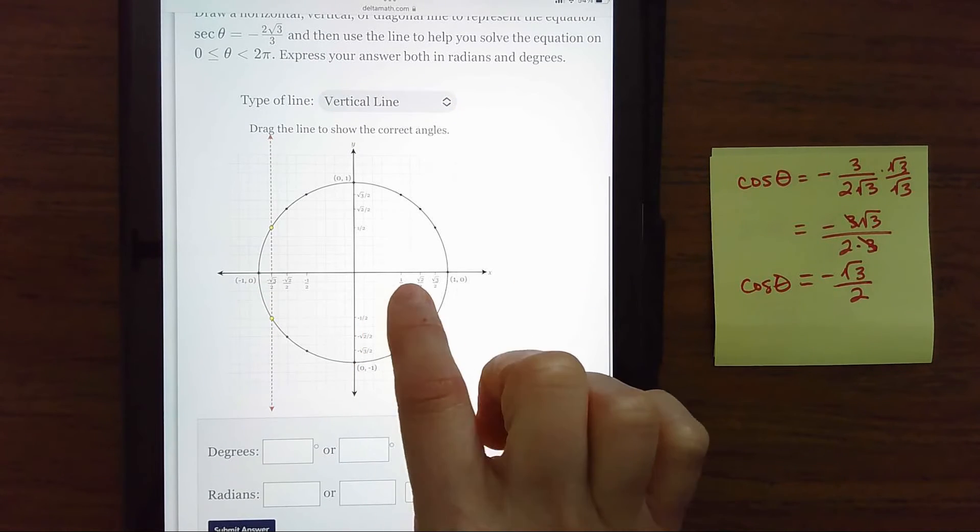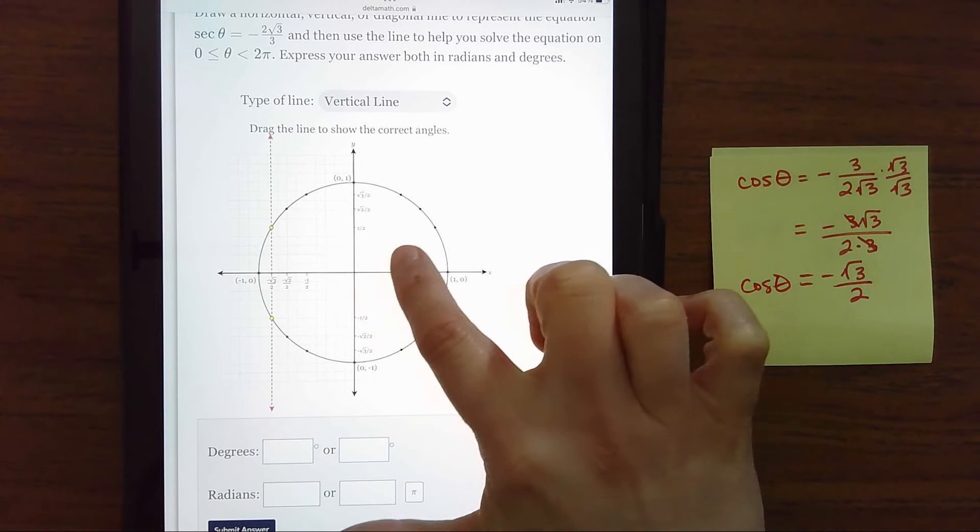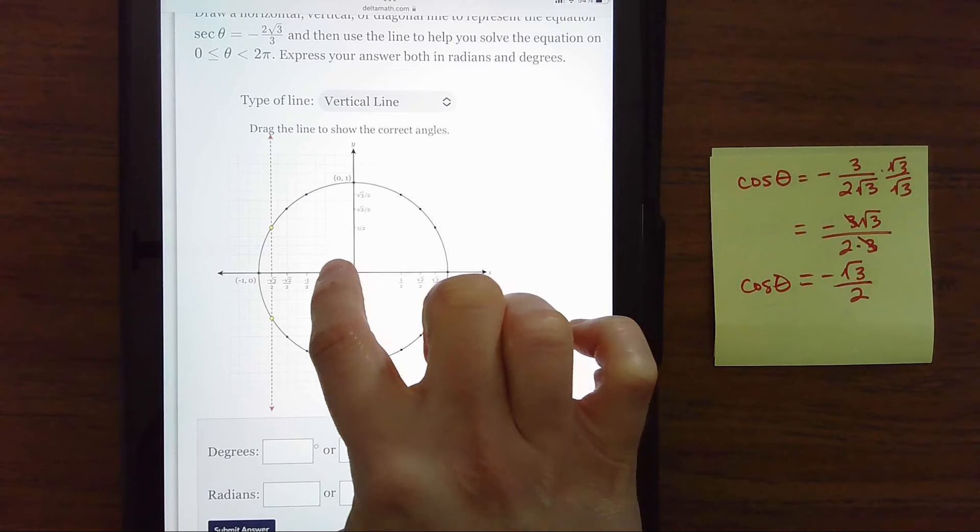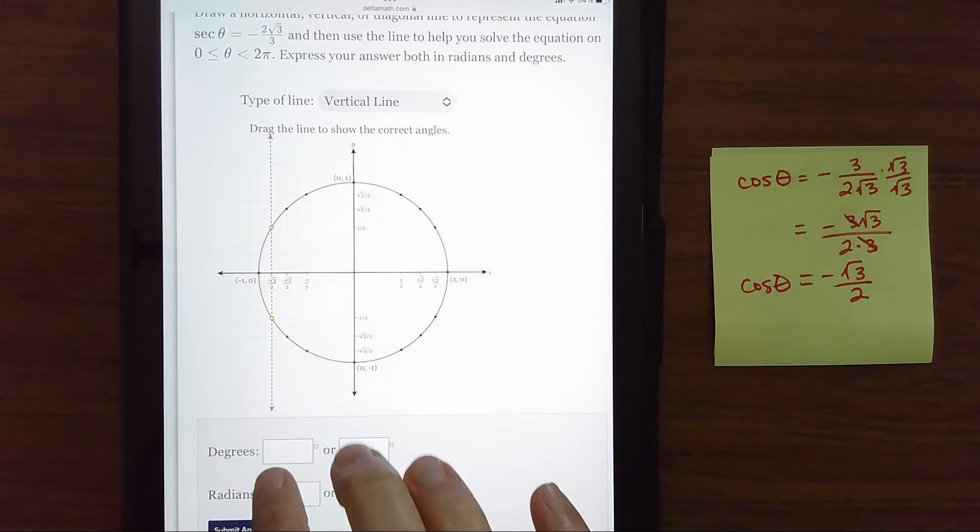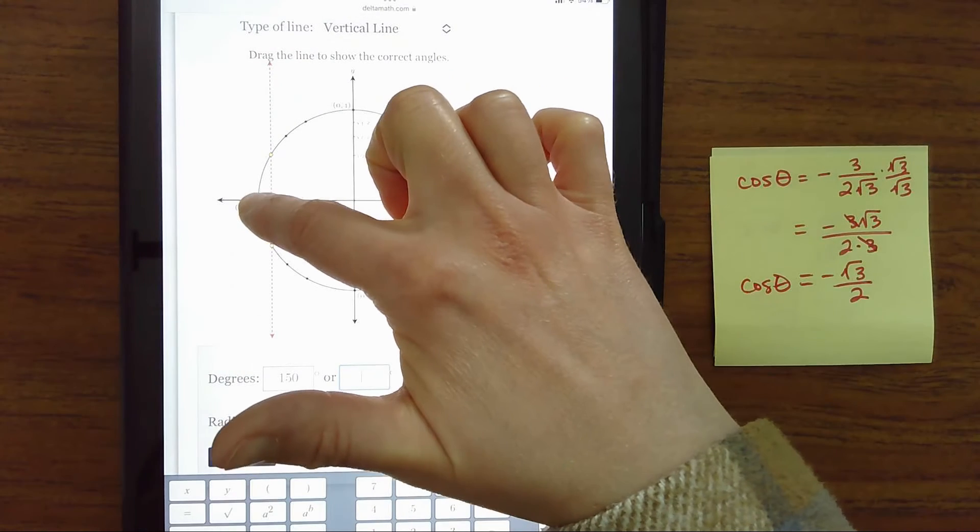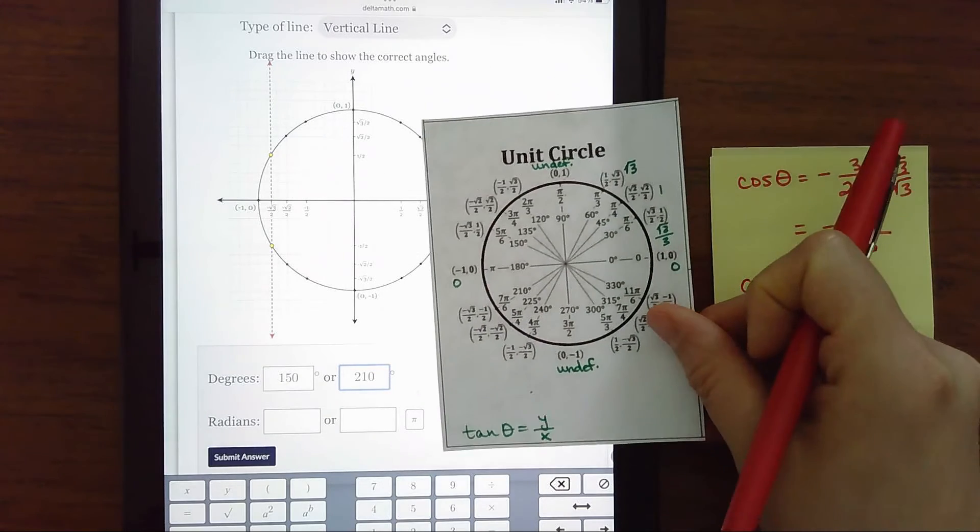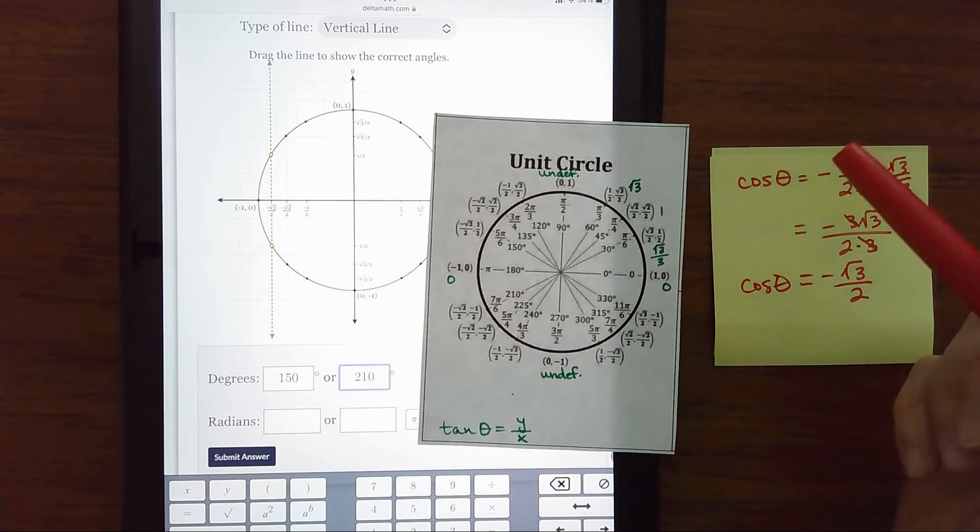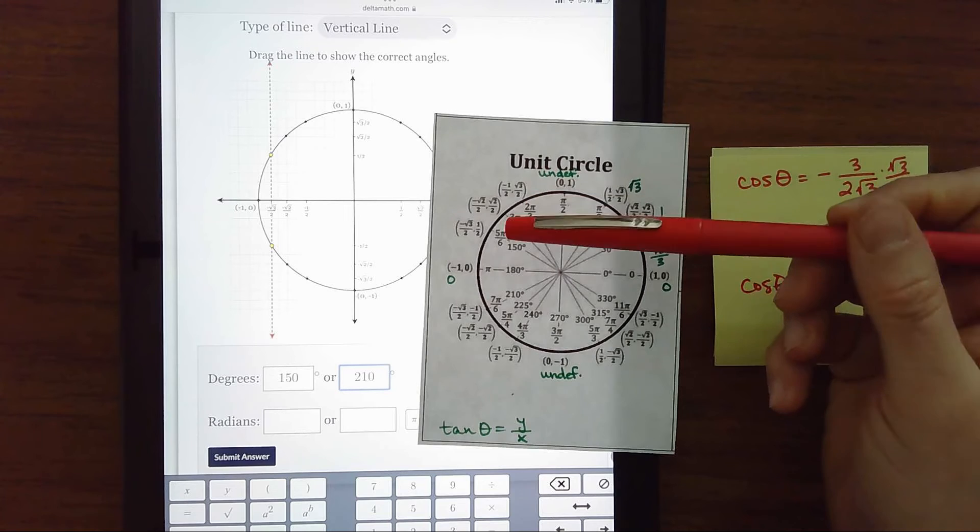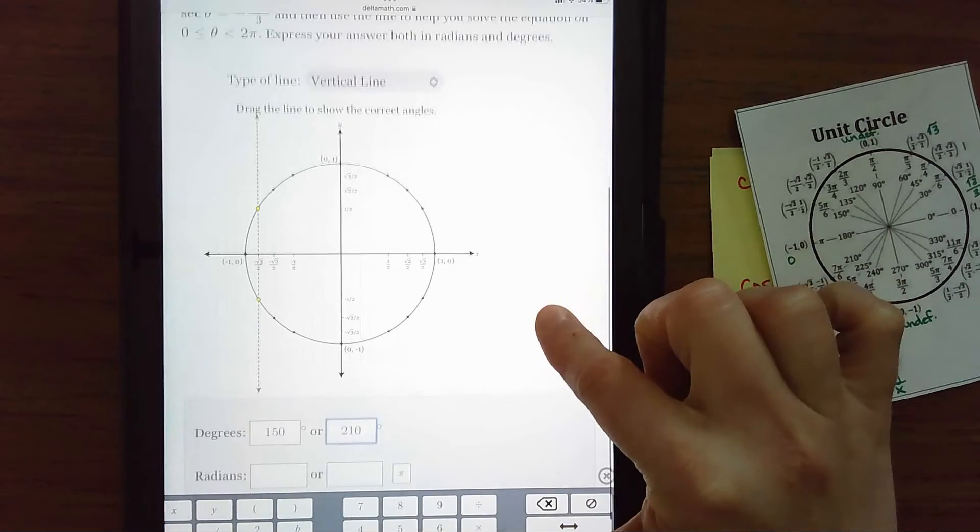we should know what reference angle that is. Remember this first dot is a 30 degree angle. So we're 30 degrees back from 180. 180 minus 30 would put us at 150 and then 30 degrees plus 180 would be 210. And so you could turn those into radians really easily. You could also get your unit circle out and look. And we see that's at five pi over six and seven pi over six.